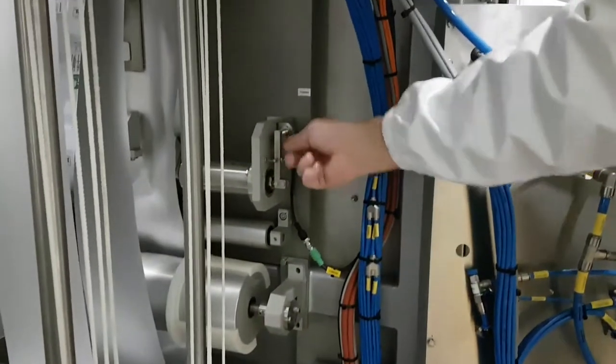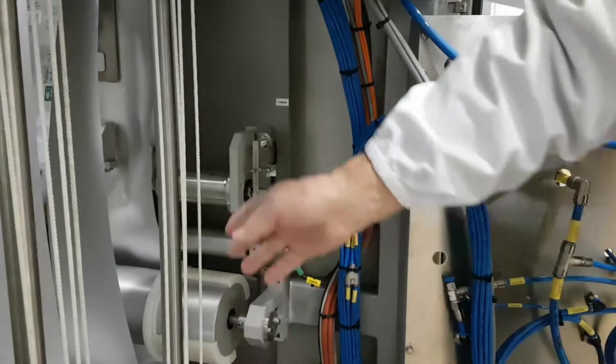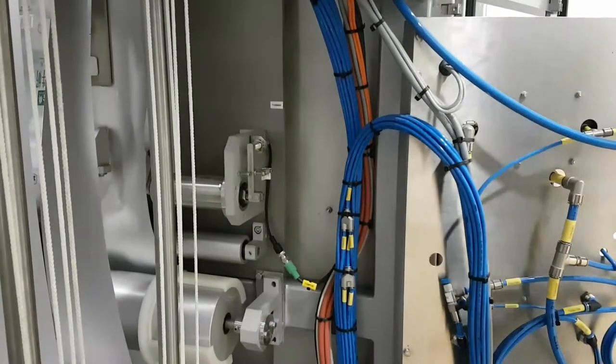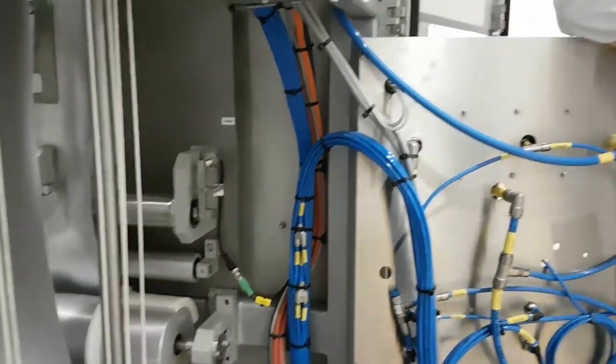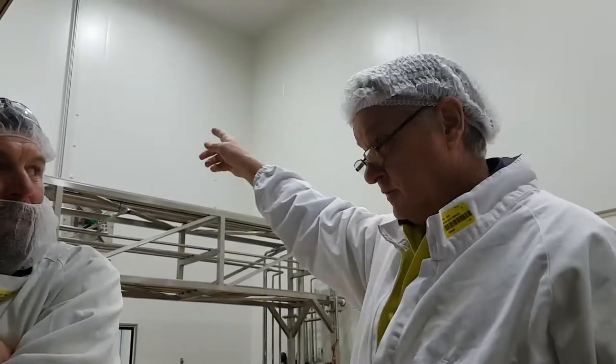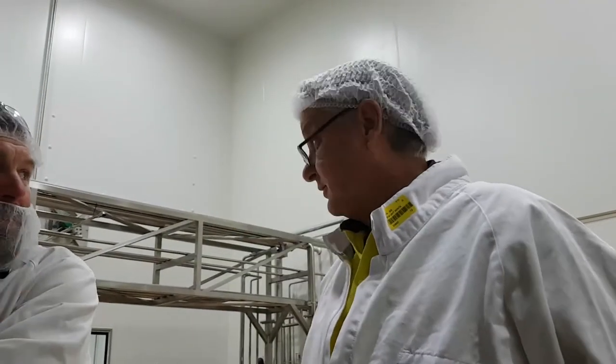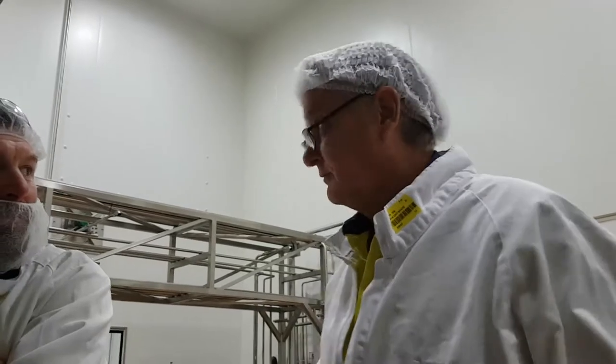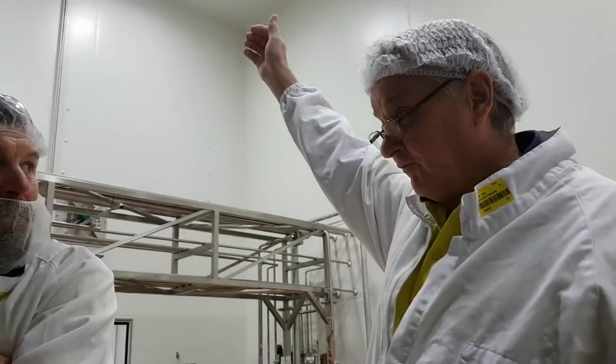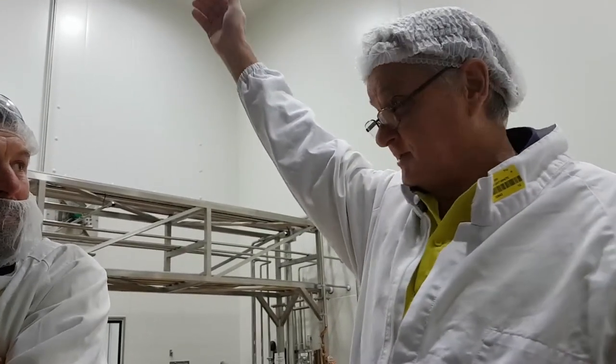But in normal running, sometimes we have this. It can bounce. Not as bad as that, but it can bounce. So we don't want a false signal going through, because it might say there's a splice coming up and get rid of the impeccator.